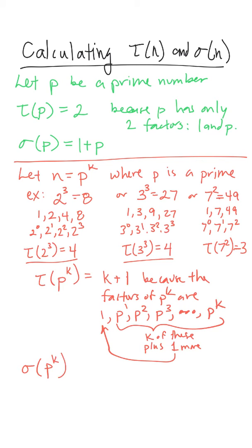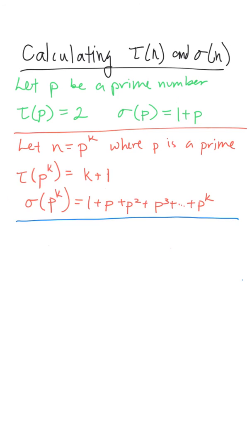Sigma of p to the k is going to be the sum of all those factors: 1 plus p plus p squared plus p cubed, all the way up to p to the k. There's a more efficient formula from an earlier video, but we don't really need that right now.